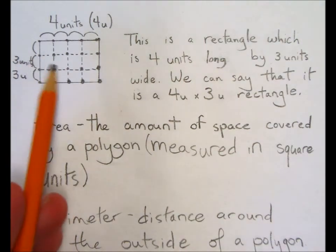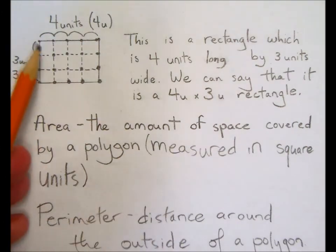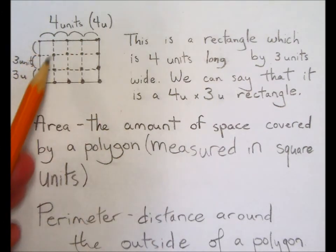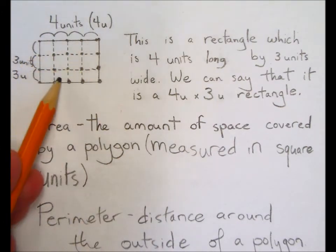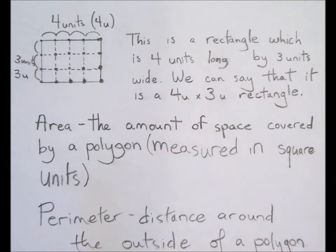If we were to count the squares inside here created by the intersection of these lines that we drew, we would count 1, 2, 3, 4, 5, 6, 7, 8, 9, 10, 11, 12 square units. So, the area of this figure is 12 square units.